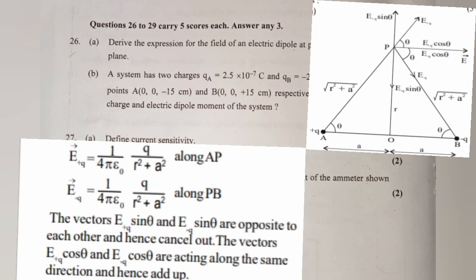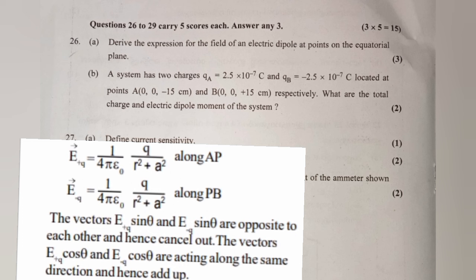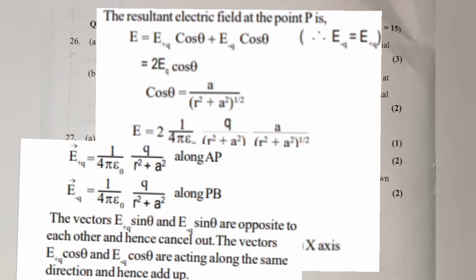Answer: Vector E(+q) = (1/4πε₀) × q/(r² + a²) along AP. Vector E(−q) = (1/4ε₀) × q/(r² + a²) along PP. The vectors E(+q)sinθ and E(−q)sinθ are opposite to each other and cancel out. The vectors E(+q)cosθ and E(−q)cosθ act along the same direction and add up. The resultant electric field at point P is E = E(+q)cosθ + E(−q)cosθ = 2E·cosθ.